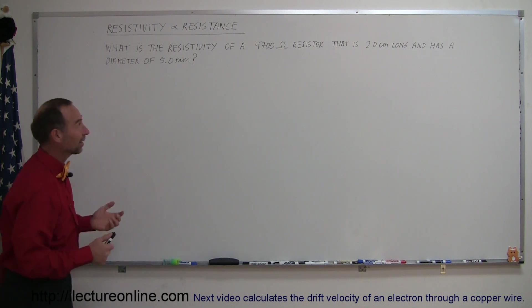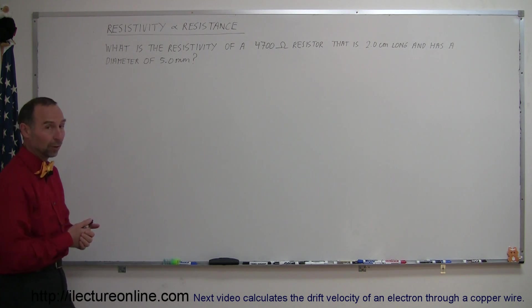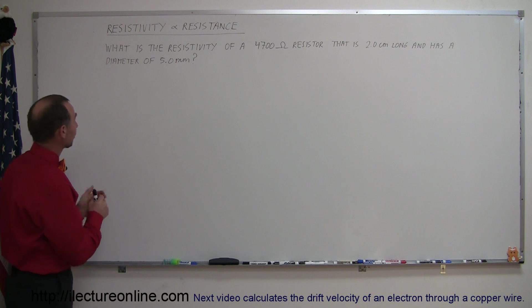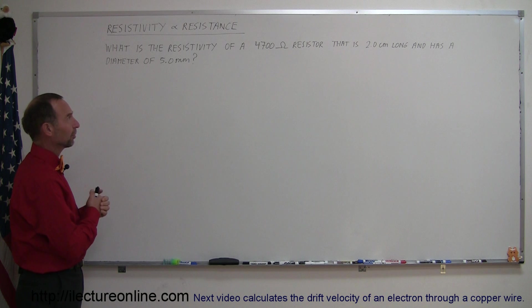Welcome to iLecture Online, and here's a second example of how to work with resistance and resistivity. In this case, I turned the problem a little bit around. It asks: what is the resistivity of a 4,700 ohm resistor that is 2 centimeters long and has a diameter of 5 millimeters?